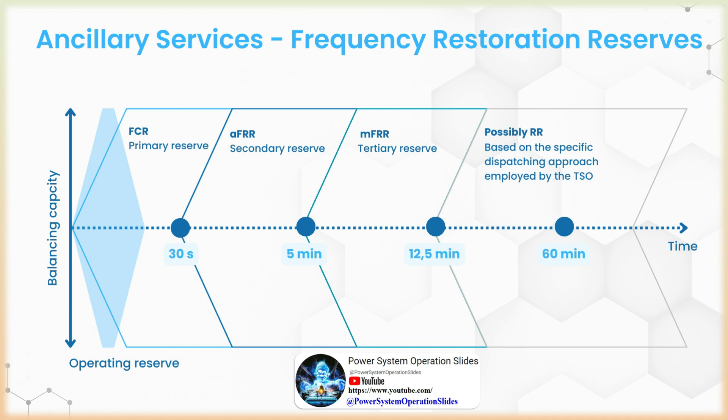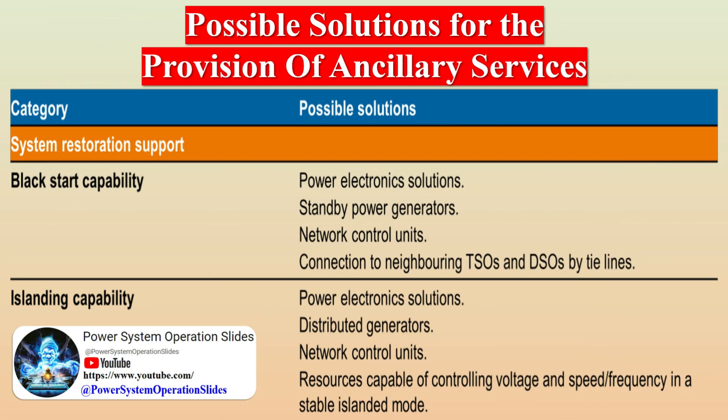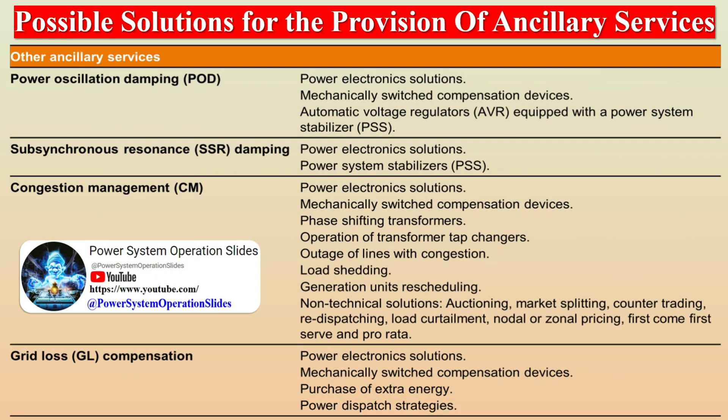Restoration reserves are typically activated in the aftermath of significant disruptions, such as large-scale blackouts or cascading failures. The activation time for RR can vary significantly, depending on the complexity of the restoration process and the extent of the damage. RR may need to be available for an extended period, potentially spanning several hours to days, as restoring a large-scale grid system can be a complex and time-consuming task.